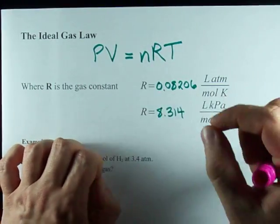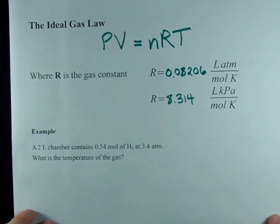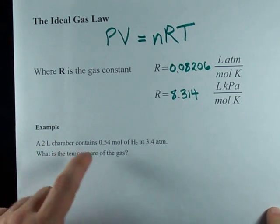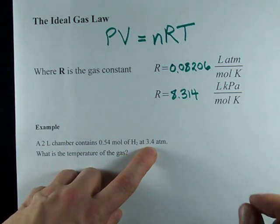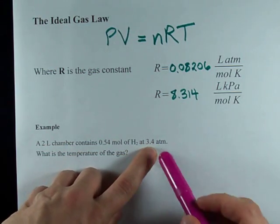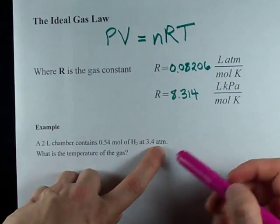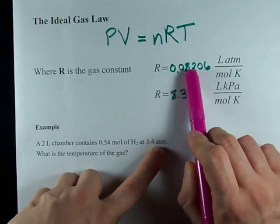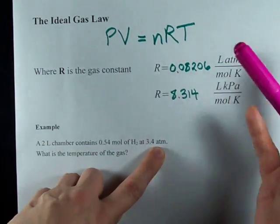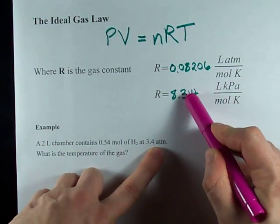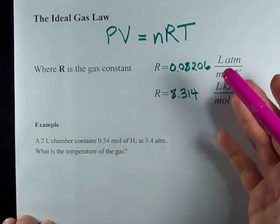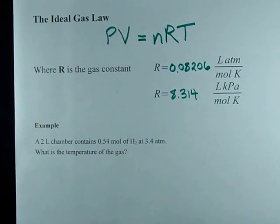Let me give you an example and you can see how this works. I've got a two liter chamber, it contains 0.54 moles of H2, and a pressure of 3.4 atmospheres. Now I notice the atmospheres there, so I'm going to want to use this R here. I could also just convert this to kPa and then use this R, but that sounds like a lot of work, and I'm an atmosphere man. They're asking us what the temperature of the gas is.